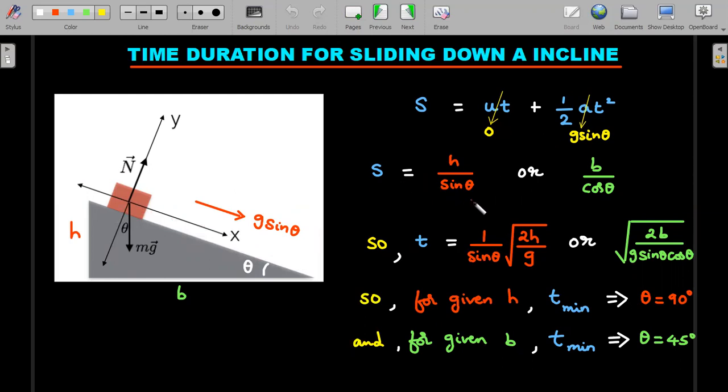Since you are starting it from rest, u is zero, a is g sinθ as I explained. When you rearrange you end up getting the value of the displacement. After substituting displacement, you can substitute this hypotenuse in terms of either h/sinθ or b/cosθ.